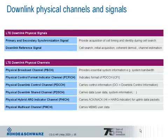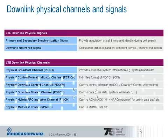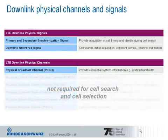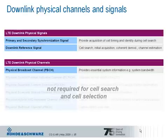Back to the first step after powering up the UE. For the cell search and cell selection, just the downlink physical signals and the physical broadcast channel are important. A successful execution of the cell search and selection procedure, as well as acquiring initial system information, is essential for the UE before taking further steps in communicating with the network.